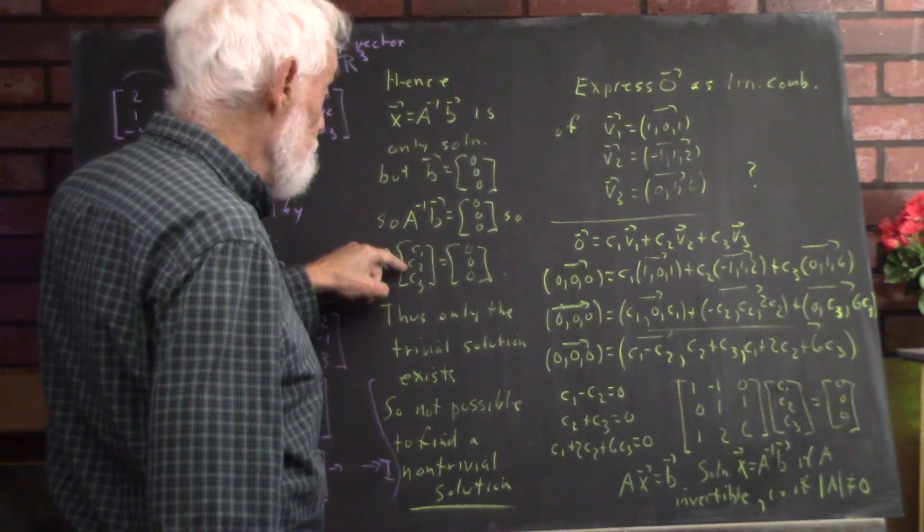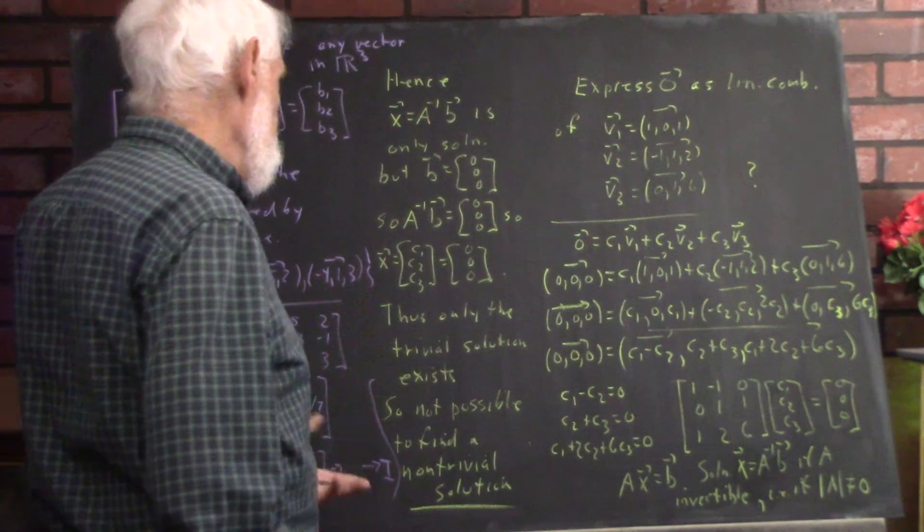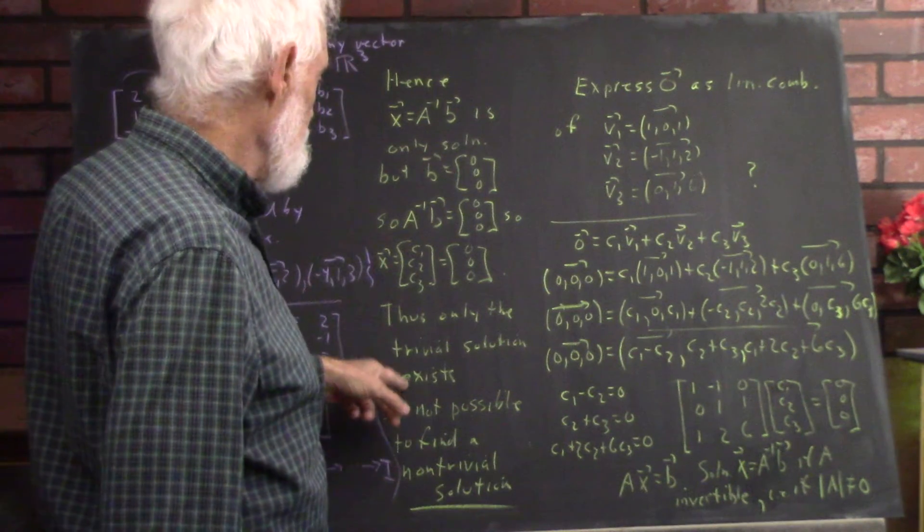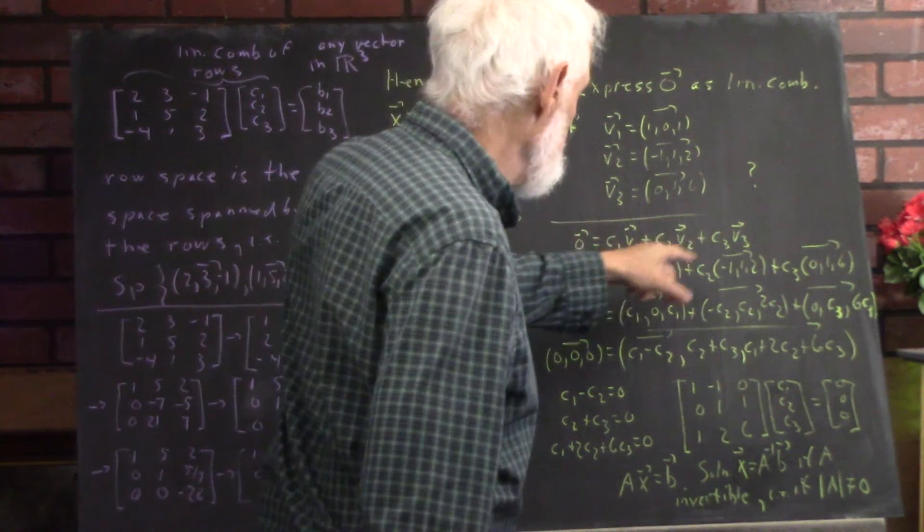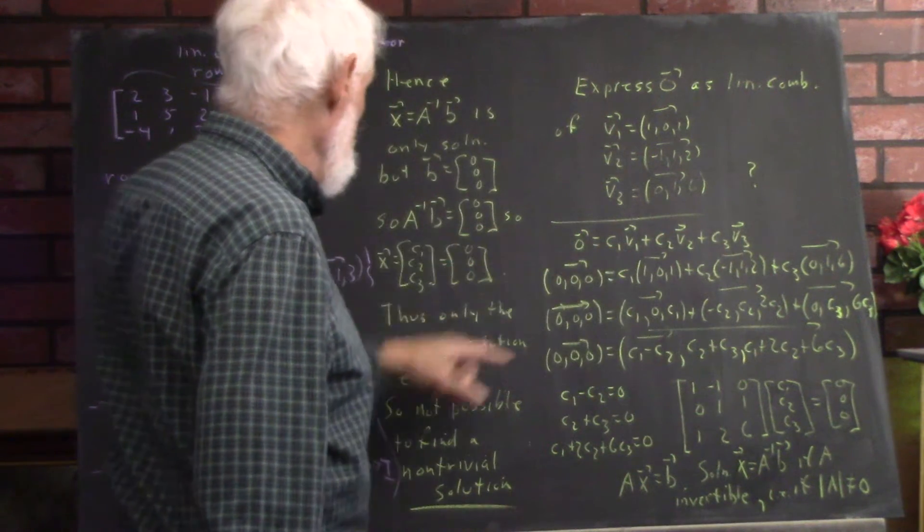But x is C1, C2, C3 which means C1, C2 and C3 are all zero. So, only the trivial solution exists. Only the trivial linear combination for C1, C2 and C3 are all zero will give you the zero vector.